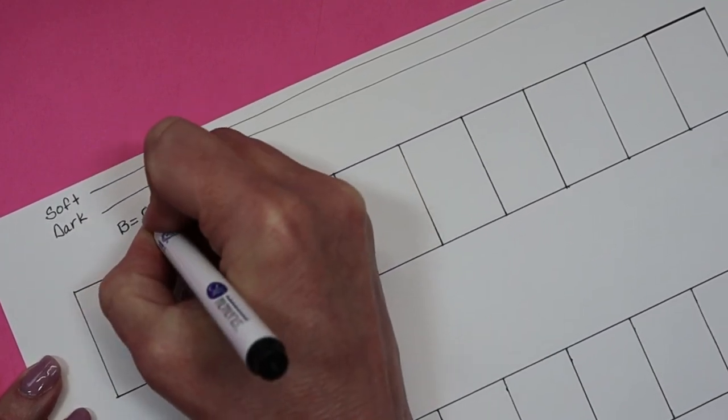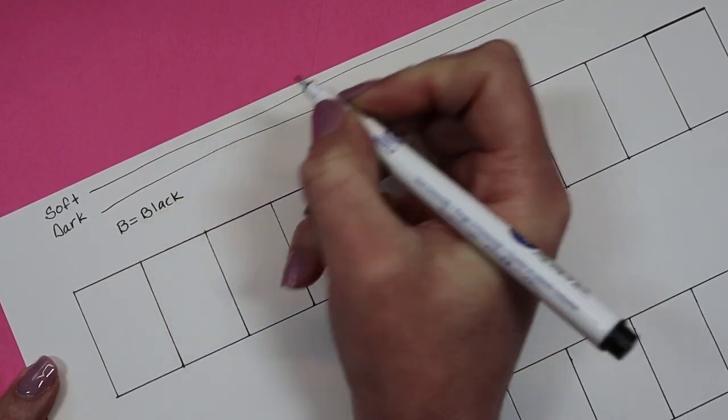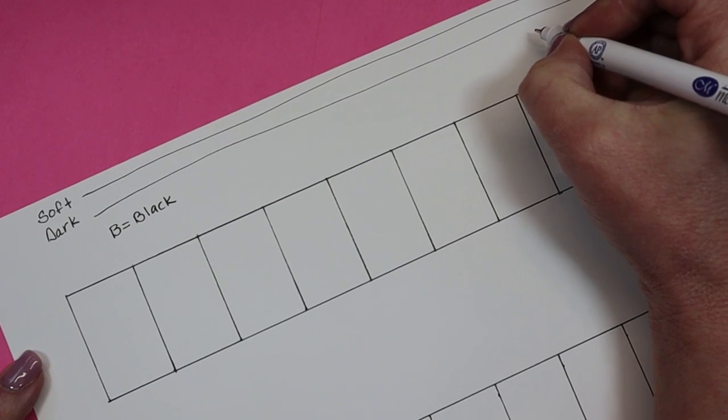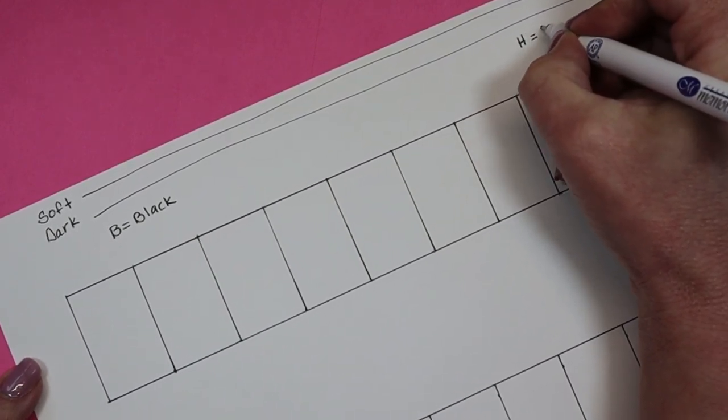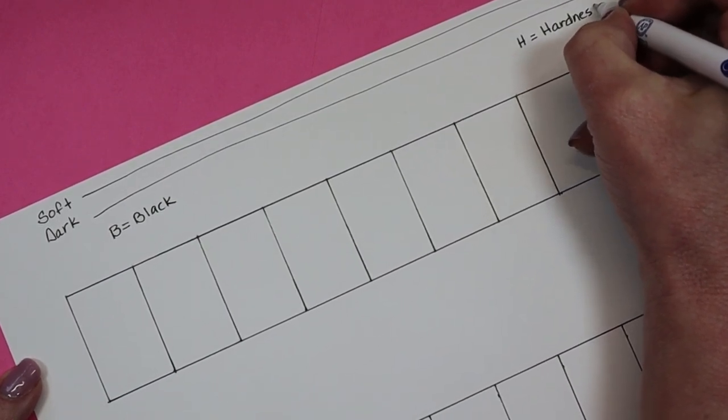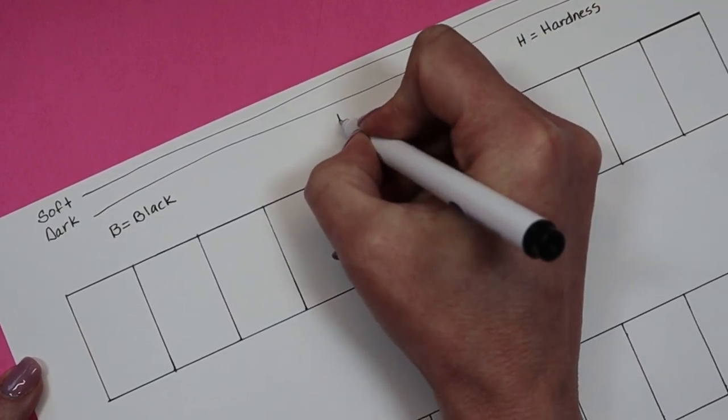Now the B pencils—the B stands for black, the darkness, the blackness of the pencil. So the higher the number, the darker that pencil's going to be. And H equals the hardness of the pencil. The lighter the pencil, the harder the pencil, the further away from center you are.